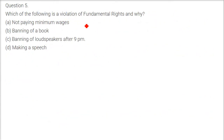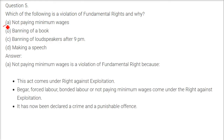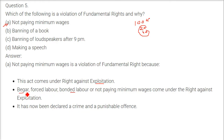Which of the following is a violation of fundamental rights? Not paying minimum wages — if the agreed wage is 100 rupees but only 20 or 40 rupees are given, this is a violation of fundamental rights under the right against exploitation. This right prohibits begaar (unpaid work), forced labor, bonded labor (bandhua mazduri), and using force to make people work without minimum wages. The buying and selling of people or labor as slaves is also prohibited and has been declared a crime and punishable offense.